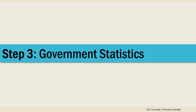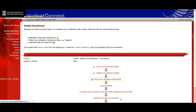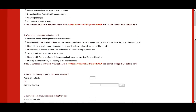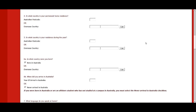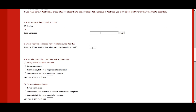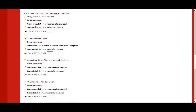The next step collects information required by the Australian Government. Check the accuracy of any information that is already recorded and provide missing information where required. If your citizenship status or Aboriginal or Torres Strait Islander status isn't correct, you'll need to visit Student Central with your appropriate documents to have your details updated.